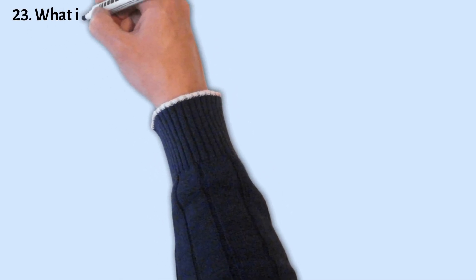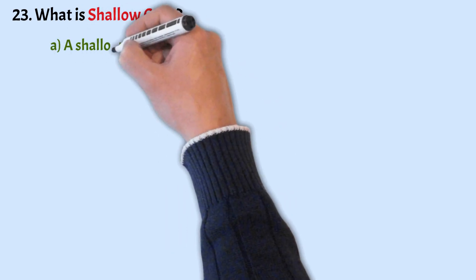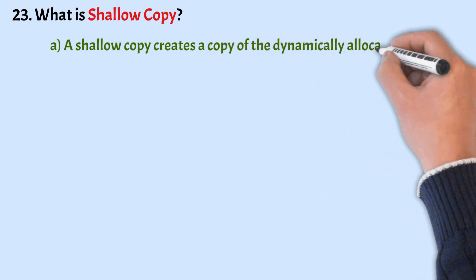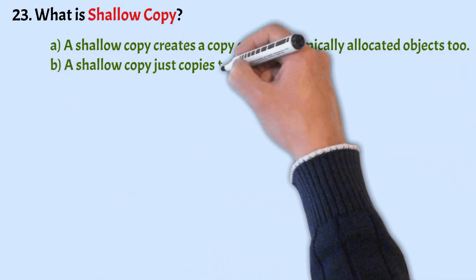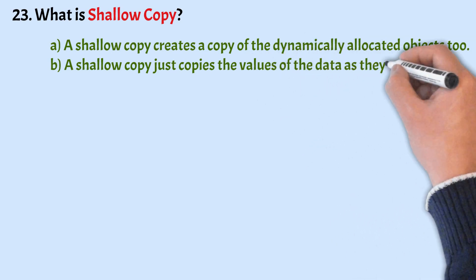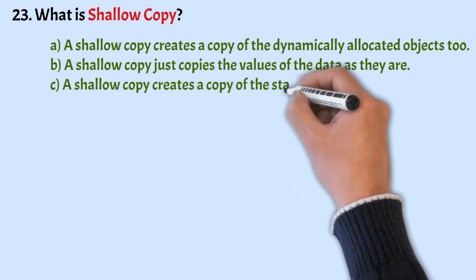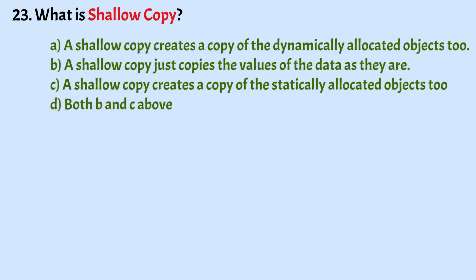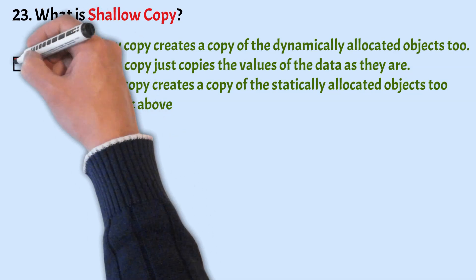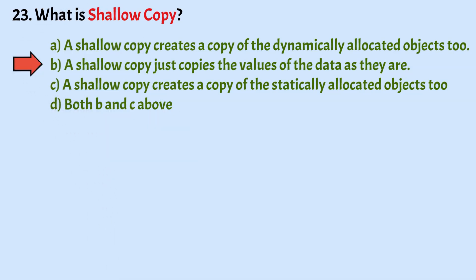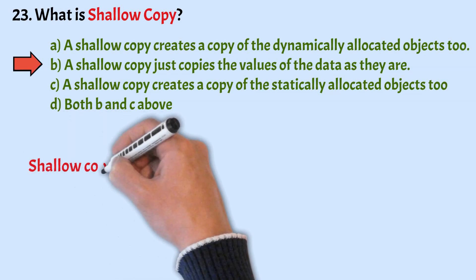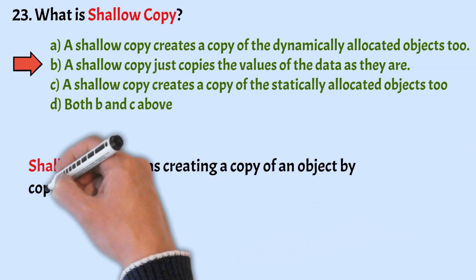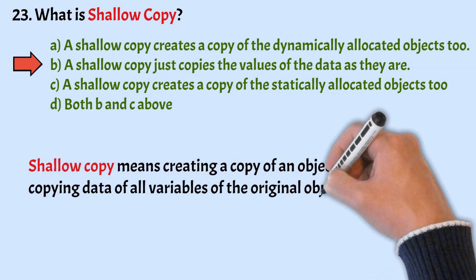What is shallow copy? The options are: a shallow copy creates a copy of the dynamically allocated objects too; a shallow copy just copies the values of the data as they are; a shallow copy creates a copy of the statically allocated objects too; and both B and C. The correct answer is option B. Shallow copy means creating a copy of an object by copying the data of all variables of the original object.